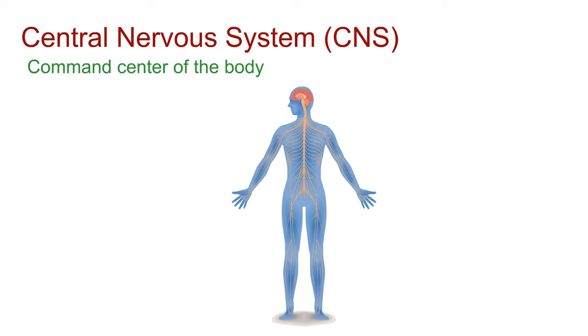The central nervous system, or CNS, is like the command center of our body. It consists of the brain and spinal cord, working together to control and coordinate every little thing we do. The first part of the central nervous system is the brain.